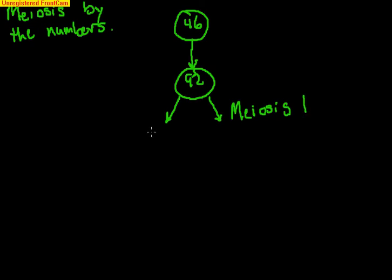So, meiosis I goes through that, and it has two new cells with 46 and 46 because you divided the 92.